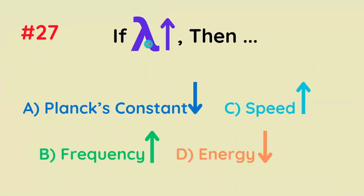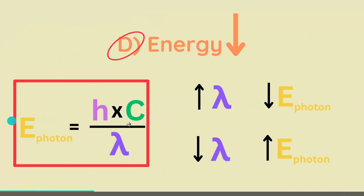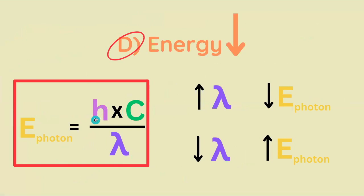If wavelength increases, then what increases or decreases? Energy decreases, because when we use the equation that marries the wave and particle models of light, we see that wavelength and energy are inversely proportional.